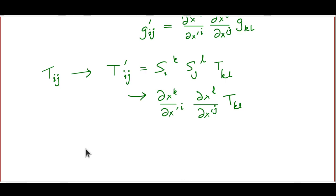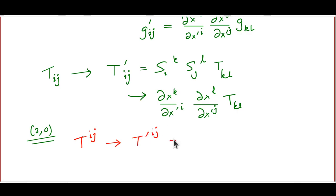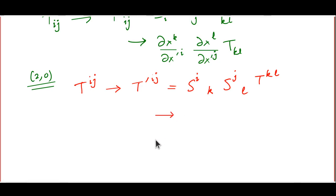You should also be able to guess what a second rank contravariant tensor — our 2,0 tensor — would transform like. We place both indices upstairs, and t^ij transforms to t'^ij. Now you get the vector transformation coefficients twice: t'^ij = S^i_k S^j_l t^kl. For a general coordinate transformation, t'^ij = (∂x'^i/∂x^k)(∂x'^j/∂x^l) t^kl. Notice that a k index in ∂x^k — in the denominator so to speak — behaves like a downstairs index, consistent with the upstairs-downstairs summation rule.